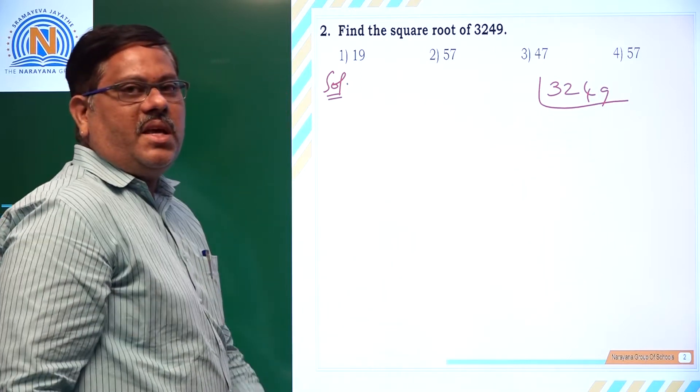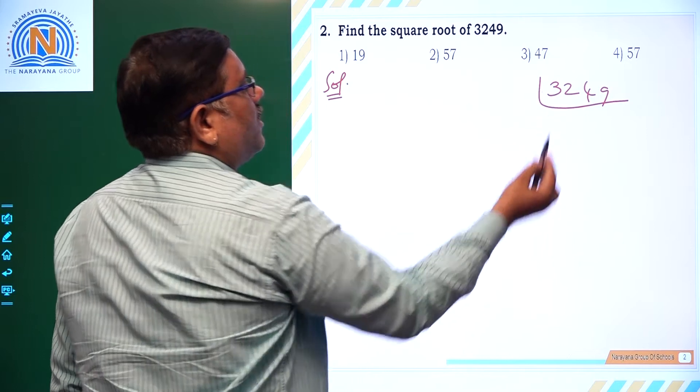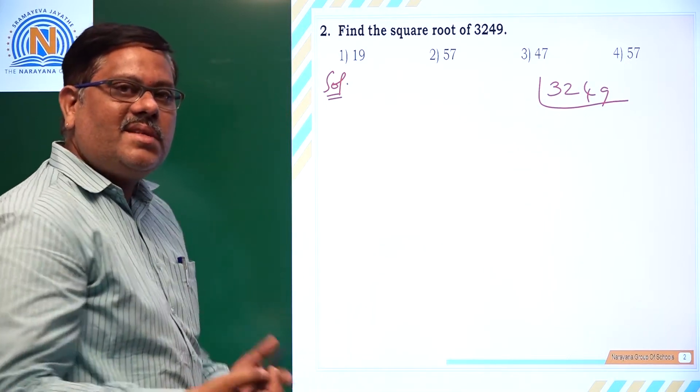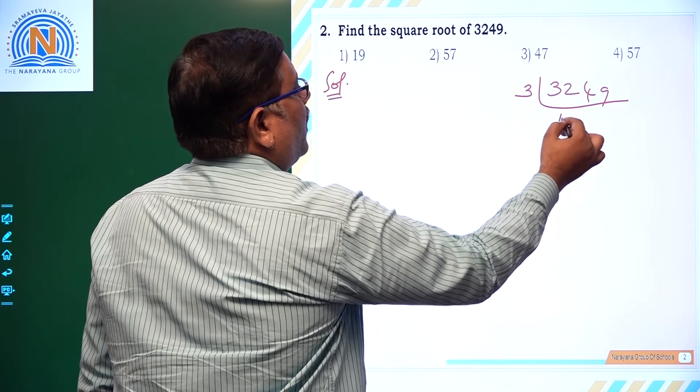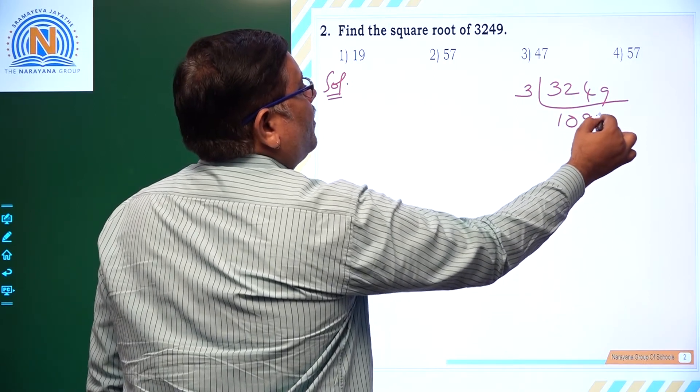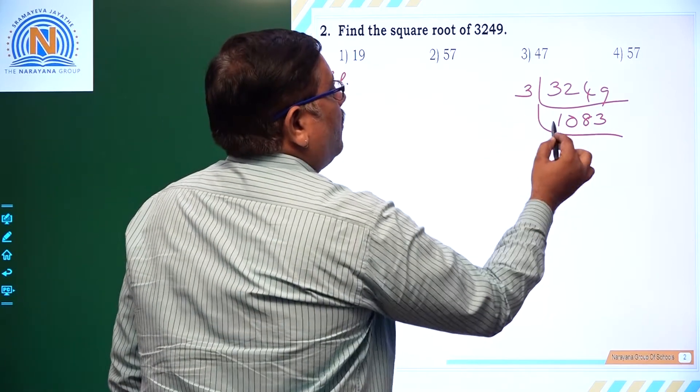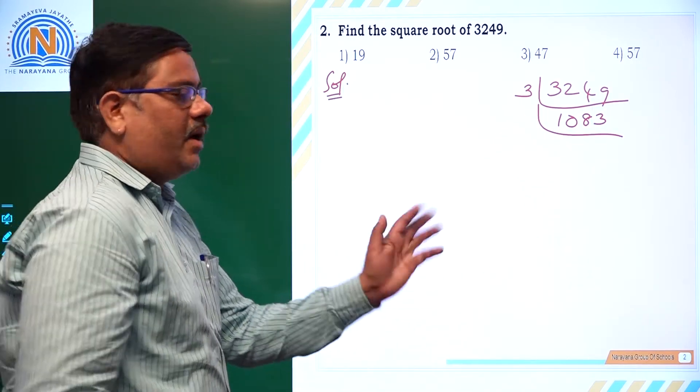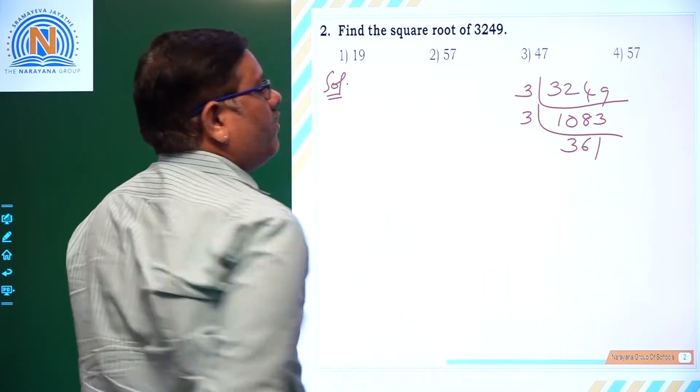It is not divisible by 2 because it is an odd number. 3249, 9 plus 4 is 13, 13 plus 2 is 15, plus 3 is 18. 18 is divisible by 3, so it can divide this number by 3. So we have 1083. 1083, 1 plus 8 is 9 plus 3 is 12. Again you can divide it by 3. So 3 times 3 is 9, 6 times 3 is 18, 1 times 3 is 3, 361.